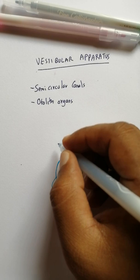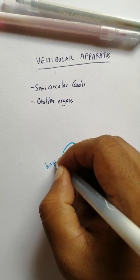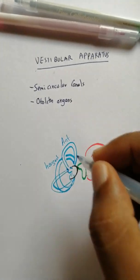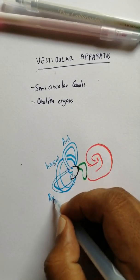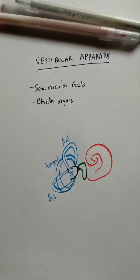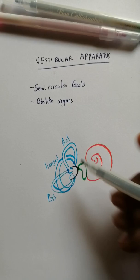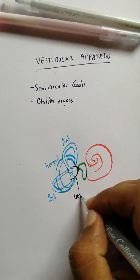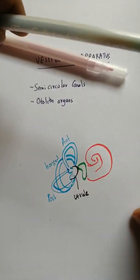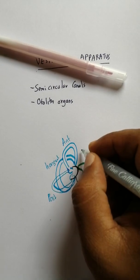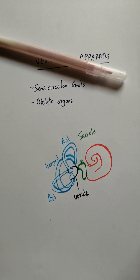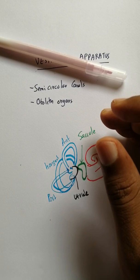So it's basically the horizontal one, anterior one, and posterior one—the anterior and posterior semicircular canals. Here you have the utricle, so that's the utricle, and here you have the saccule.